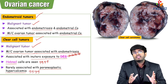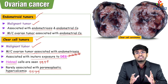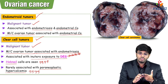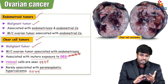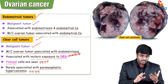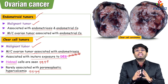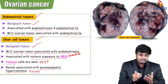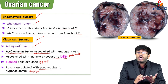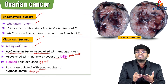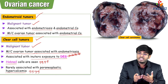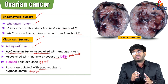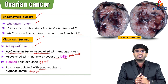We have completed all the epithelial cell tumors: serous tumors, mucinous tumors, Brenner's tumor, endometroid tumor, and clear cell tumor. In the next part, we will discuss sex cord stromal tumors and germ cell tumors in part 2 of the video. Thank you.